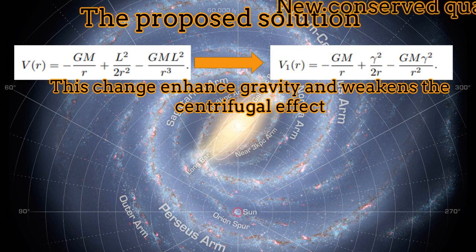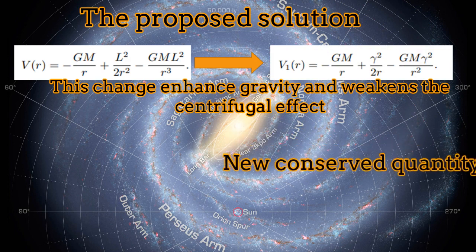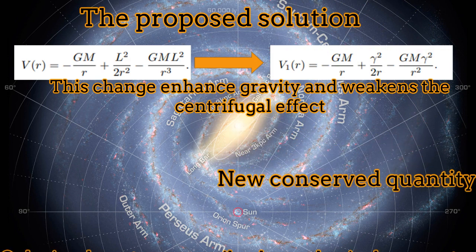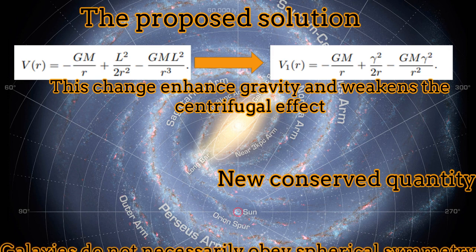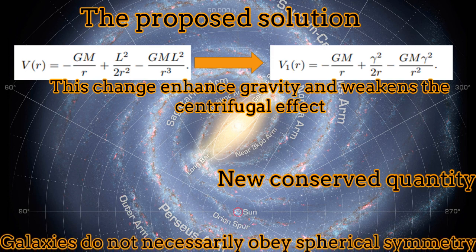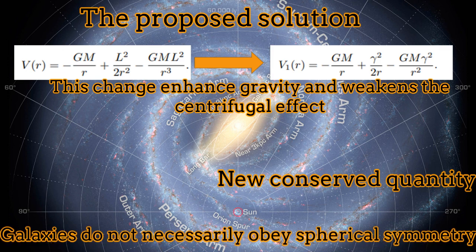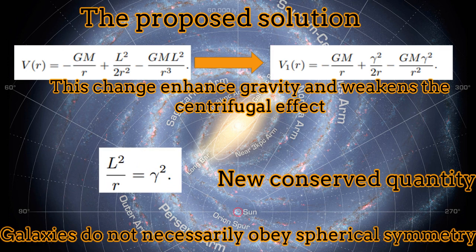The solution proposed in the paper, in order to explain the observed effects of dark matter, is that the symmetries from spatial rotations are not respected anymore at galactic scales, and as a consequence, the angular momentum is not conserved anymore. Then another conserved quantity should be considered with the corresponding symmetry involved. The new conserved quantity is still connected to the velocity of rotations of the test particles around the source. This change enhances gravity and weakens the centrifugal effect.